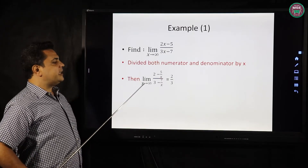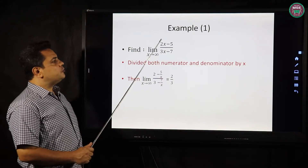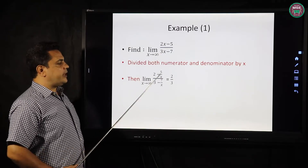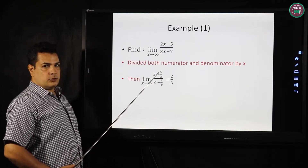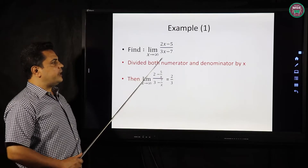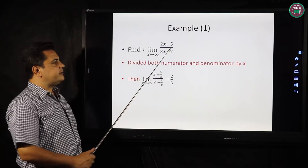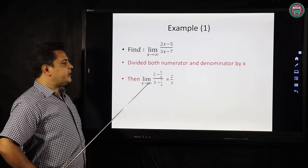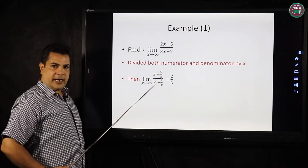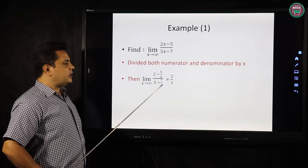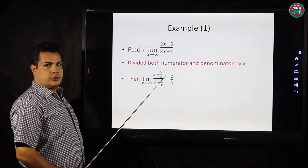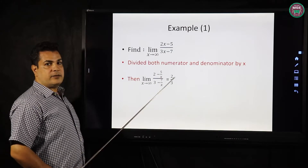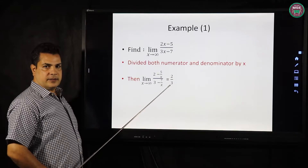Then limit x tends to infinity: 2x over x equals 2, minus 5 over x, over 3x over x equals 3, minus 7 over x. Since any number over x equals 0 as x tends to infinity, that equals 2 minus 0 over 3 minus 0, which equals 2 over 3.